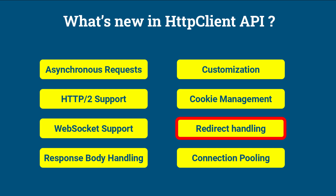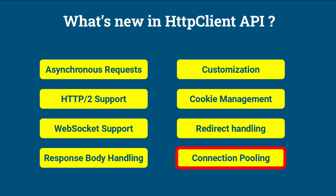Redirect Handling: The HTTP Client API handles redirects automatically by default, but you can customize the redirect behavior if needed. Connection Pooling: The HTTP Client API uses a connection pool by default, which helps improve performance by reusing existing connections.